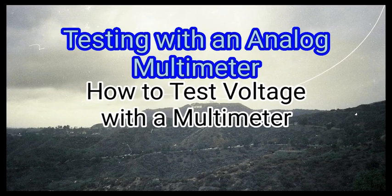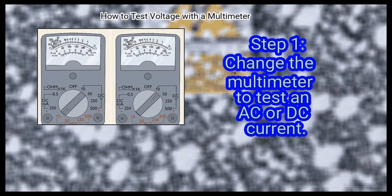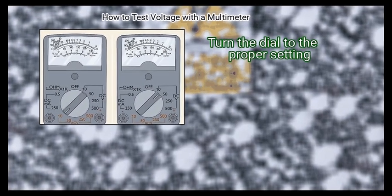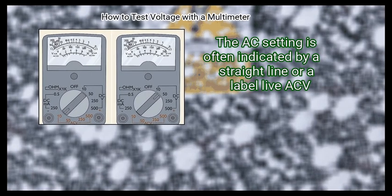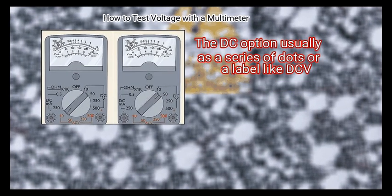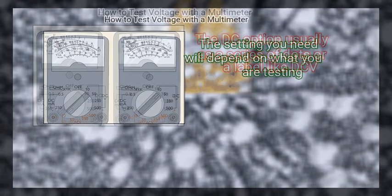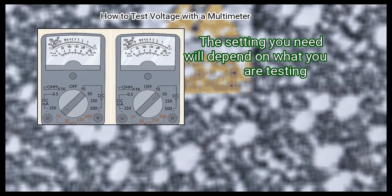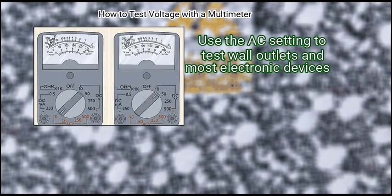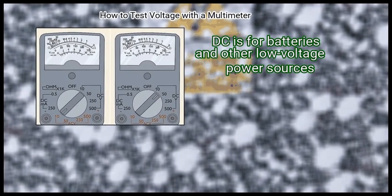Method 2: Testing with an analog multimeter. First, change the multimeter to test an AC or DC current. Turn the dial to the proper setting. The AC setting is often indicated by a straight line or a label like ACV. The DC option usually is a series of dots or a label like DCV. The setting you need will depend on what you're testing. Use the AC setting to test wall outlets and most electronic devices. DC is for batteries and other low voltage power sources.